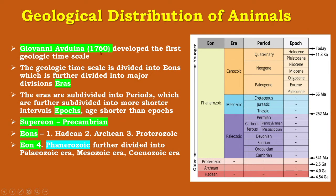Giovanni Arduino (1760) developed the first geologic time scale. The geologic time scale is divided into eons — the largest division of time — which are further divided into major divisions called eras. Eras are subdivided into periods, which are further subdivided into shorter intervals called epochs, with ages shorter than epochs. The super eon is the Pre-Cambrian, then there are three eons: Hadean, Archean and Proterozoic. The fourth eon, the Phanerozoic, is further divided into the Paleozoic, Mesozoic and Cenozoic eras.